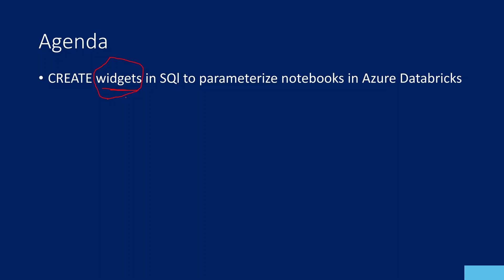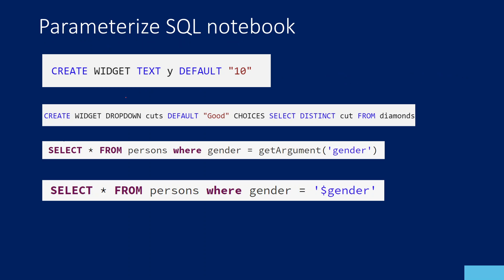Parametrization is something like if you have a notebook and you want to dynamically supply some values into that notebook during runtime, then you can create parameters in that notebook and supply values to those parameters. Inside the notebook logic, you can use those parameters according to your own needs. In the previous video we created Python notebooks; in this video, we are going to discuss about how to create widgets in SQL.